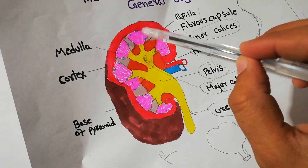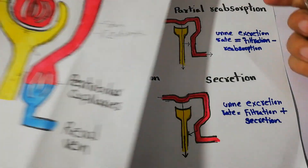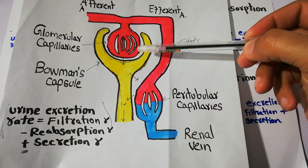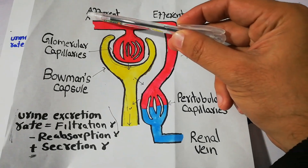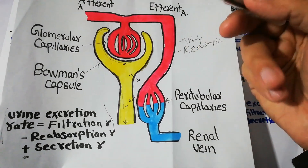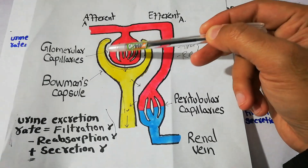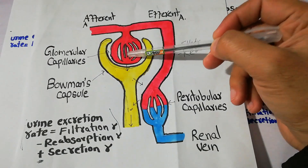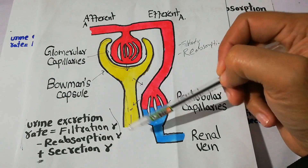Deep inside the nephrons, every nephron is basically filtering the blood. A blood vessel called the afferent arteriole comes in and forms the glomerulus, which is a capillary structure. Filtration of blood occurs in the glomerulus and the filtrate then moves into the renal tubule.